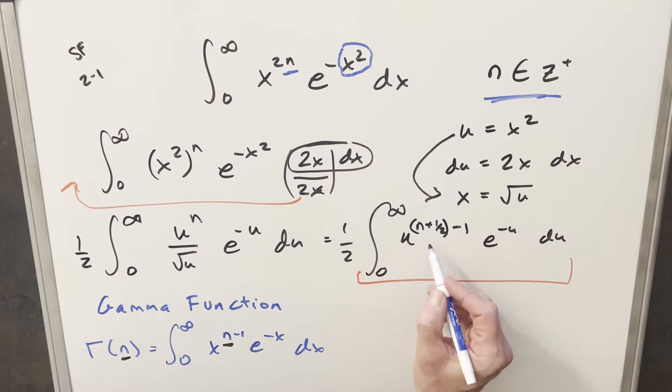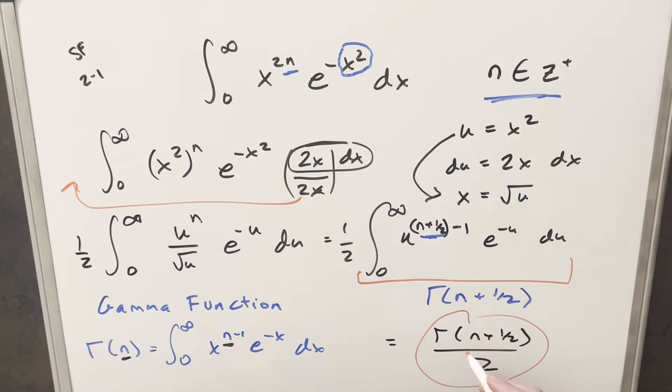What I can actually do is rewrite this exponent to get it into the same format. So I can actually write this as n plus 1 half minus 1. So now if this is the gamma function, the input here on the variable is going to be n plus 1 half. So this whole thing now is going to be the same thing as gamma of n plus 1 half. So putting this all together, what we're going to have is we're going to have gamma of n plus 1 half all over this 1 half or over 2.